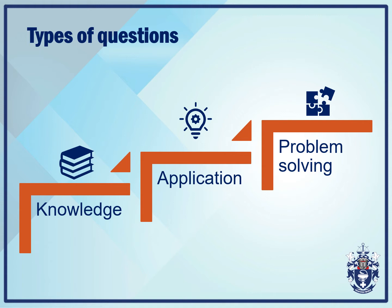Now that we've covered the overall content of the examination, let's take a look at the types of questions. Starting with knowledge questions: knowledge questions ask that you recall facts or information that you should know from your undergraduate training or practical experience. You may also use the references at your disposal to look up the information. Application questions require that you use several facts and come to a decision or judgement. Lastly, problem solving questions require that you accurately assess a situation or scenario and arrive at a solution. Take note of the icons that we have used — you will see these in the upcoming questions.